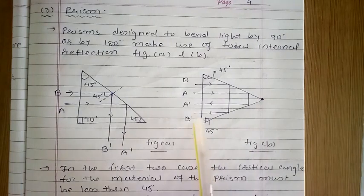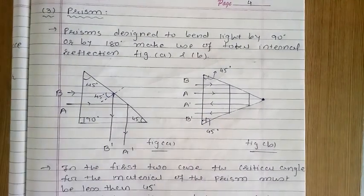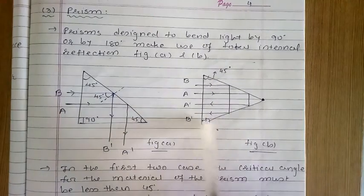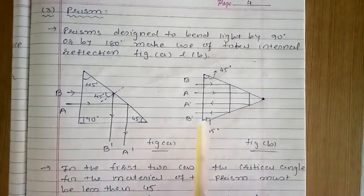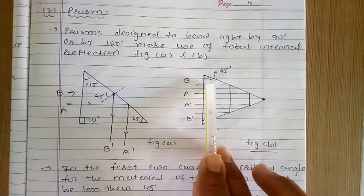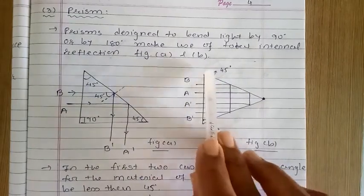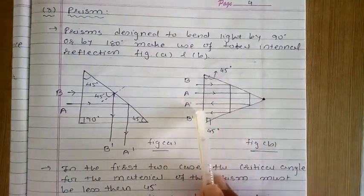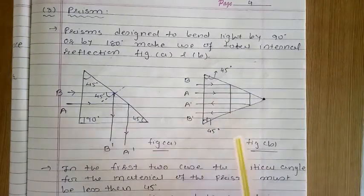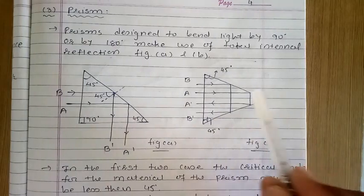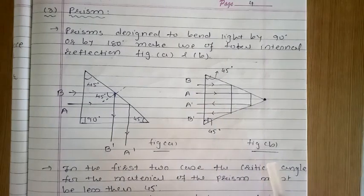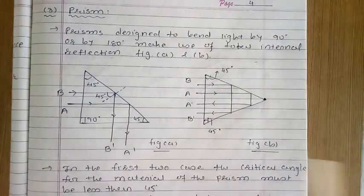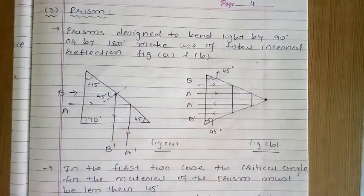Here in figure A, there is a 90-degree bend. In figure B, we bend light by 180 degrees. The ray is incident on this surface and after reflection passes like this. You can see here this is 90 degrees, and this is also 90 degrees — so 90 plus 90 equals 180 degrees. For figure A as well: 90 plus 90 equals 180 degrees. So a 180-degree bend occurs.